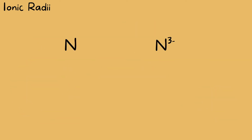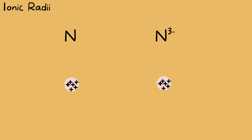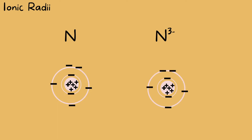In contrast, we have an anion. Nitrogen in its neutral form and in its ionic form as an anion with a negative three charge. Both have the same number of protons, that being seven. The neutral nitrogen has seven electrons while the ionic form has ten electrons.